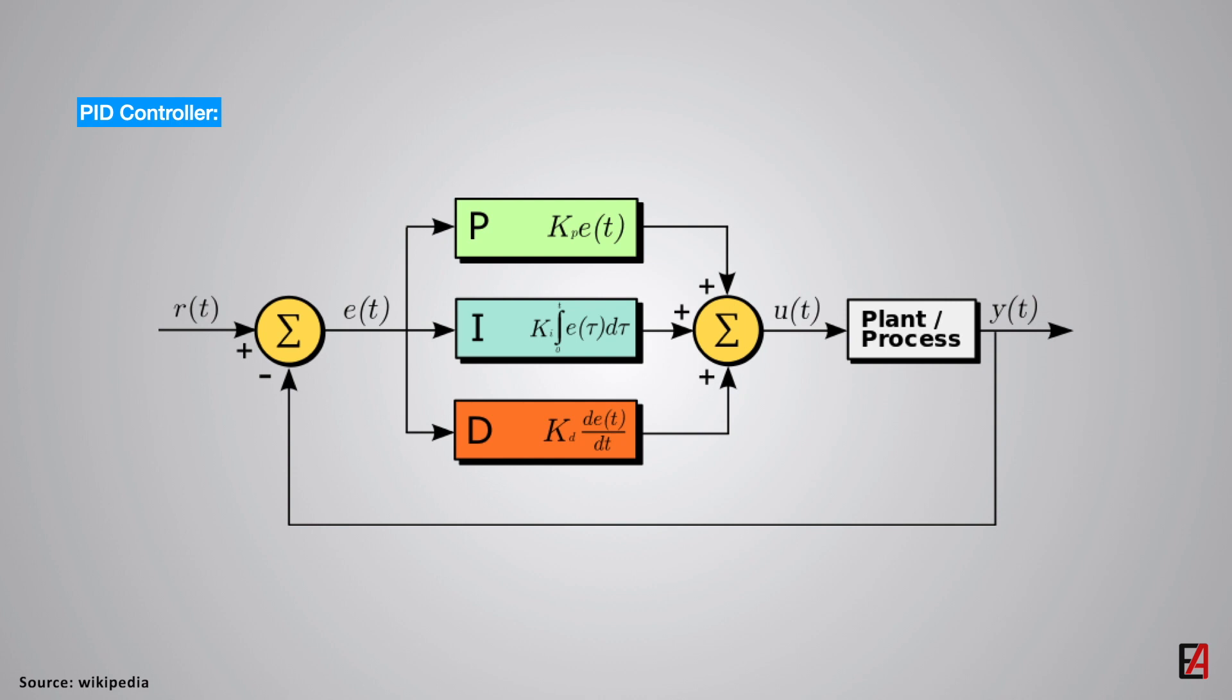The block diagram of a closed loop control system with PID controller is shown here, where the proportional, integral, and derivative controllers are combined together to provide a stable controlled output.